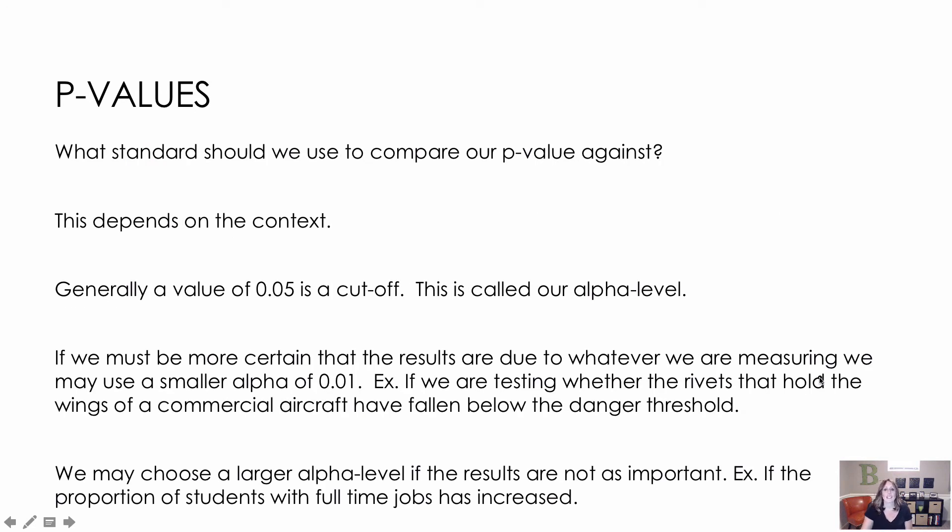So how do we decide what do we compare our p-value against? We compare it to something called an alpha level. So our alpha level is essentially the ruler by which we're going to measure our p-value against.